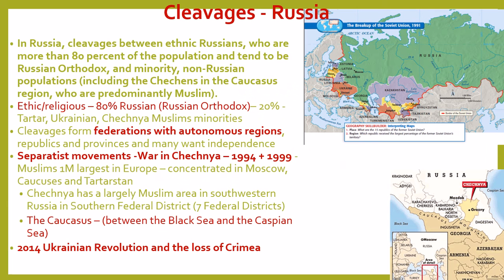Let's switch to Russia. Cleavages in Russia are between ethnic Russians, who are more than 80% of the population and tend to be Russian Orthodox, and the minority non-Russian populations, which tend to be Muslim — including the Chechens in the Caucasus region along the Caucasus Mountains. The Caucasus is the area bisected between the Black Sea and the Caspian Sea by the Caucasus Mountains, and one of those places is Chechnya. Chechnya is going to be our big example of cleavage within Russia, and yes, they did have a separatist movement as well.